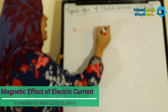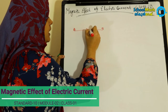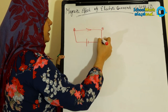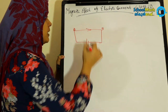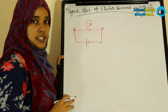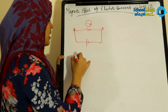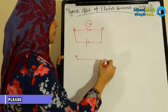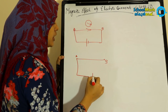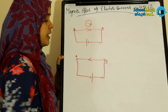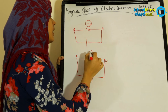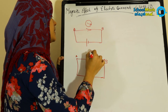So the direction of the current matters. I am going to flow the current in the A to B direction, going through the battery. I will then reverse the battery terminal so the current flows in the reverse direction. It produces a magnetic field in the opposite direction.